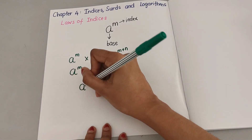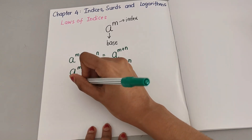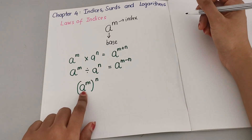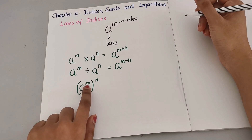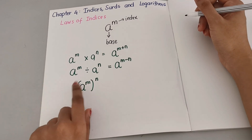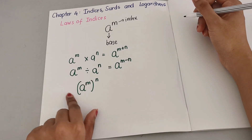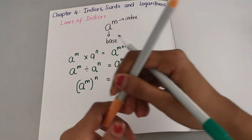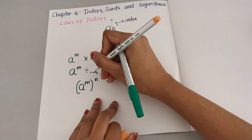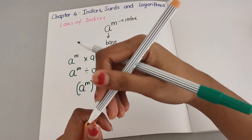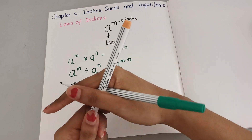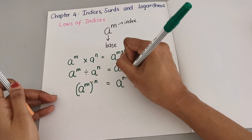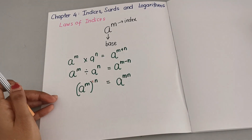Now let's say it's like this: you have one base, but you have one index to it and then another index outside the bracket. So what's going to happen here is you are going to multiply. So it's going to be M times N, giving you A to the power MN.